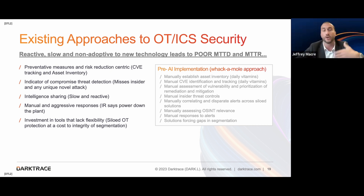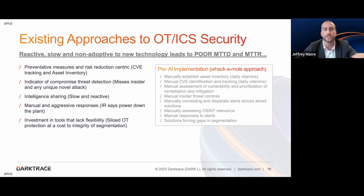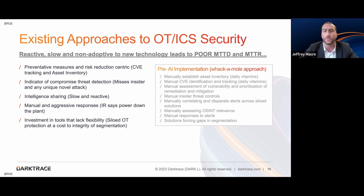The approach we take today is based off indicators of compromise. That requires a sacrificial lamb in our environment — some facility has to be attacked, has to be compromised, for us to learn how that attack happened. Then we put that technology in the indicator of compromise platform to detect it moving forward. It's not the best approach — it's very reactive. And it doesn't give us any visibility for maybe an insider threat or some sort of new novel attack we've never seen before. It just misses the mark there. Intelligence sharing is valuable — it's nice to know what types of attacks we're seeing across other sectors — but that is a slow process and again a reactive process.